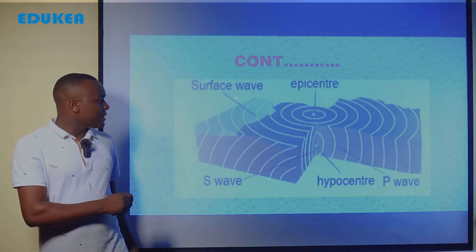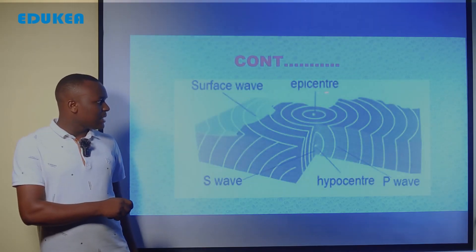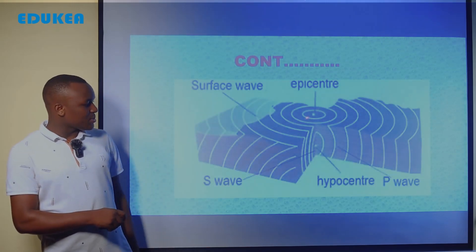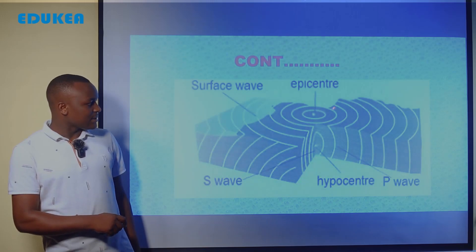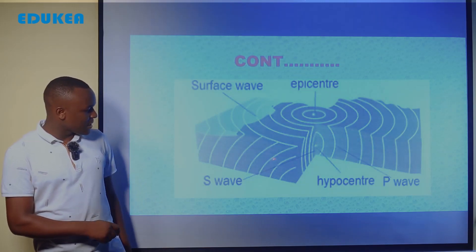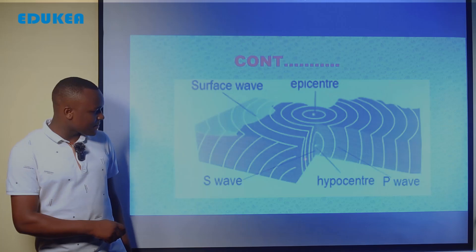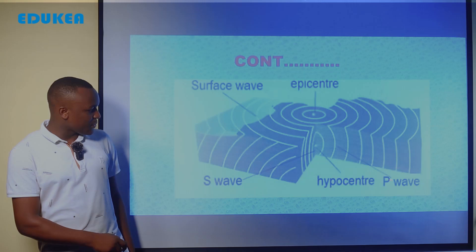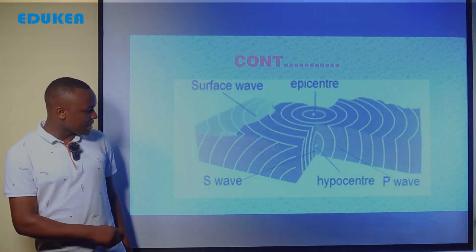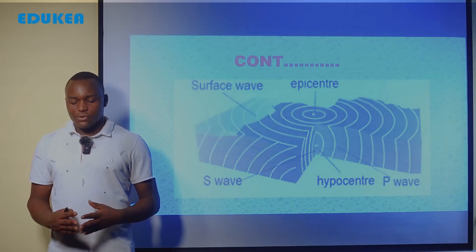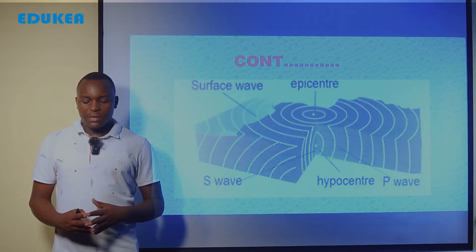As you can see in the diagram, there is an epicenter — the center above — and there is a hypocenter. There are primary waves, surface waves, and secondary waves near the hypocenter. That is how you can draw and represent the structure which shows the seismic waves.